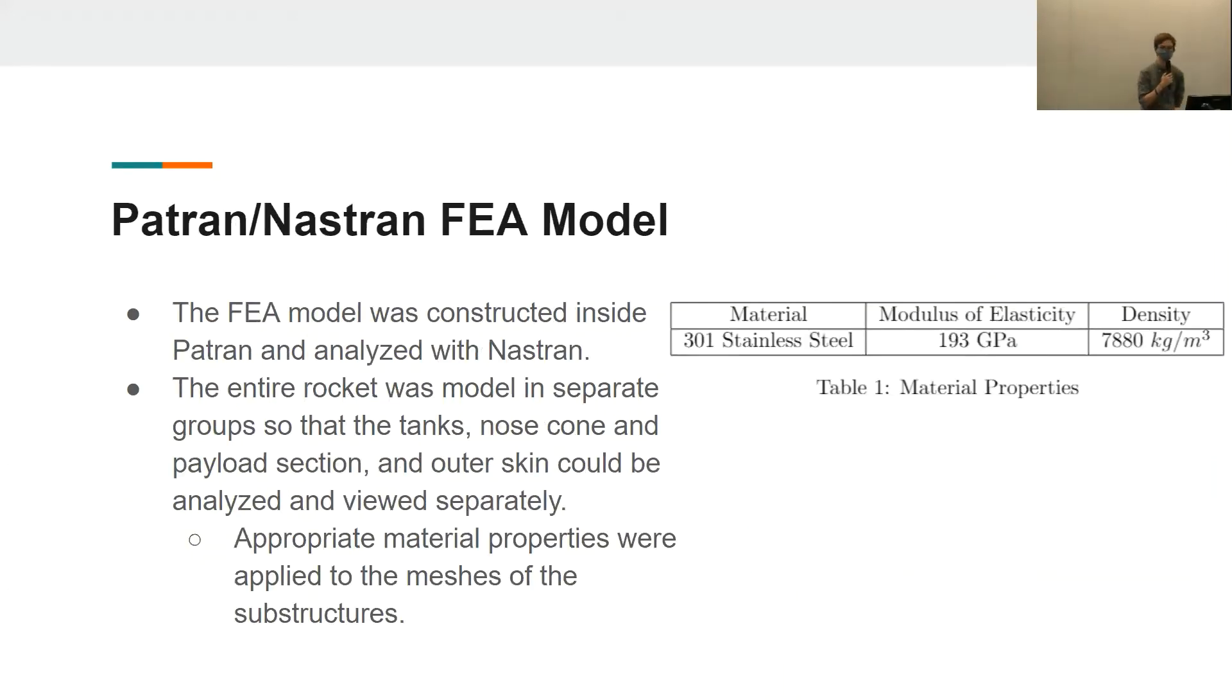Once this equivalent skin thickness was calculated, an FEA model was constructed inside PATRAN and then later analyzed inside NASTRAN. The entire rocket model was built, but it was built in separate groups, so the tanks, the nose cone and the payload, and the outer skin could be analyzed and viewed separately. Appropriate material properties and element thicknesses were applied to the meshes of these substructures.